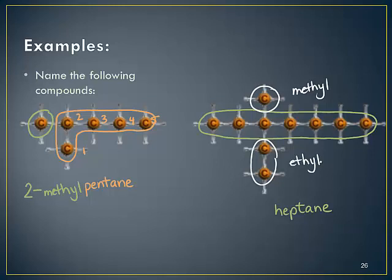Remember that when we start numbering the chain to identify where those branches are, we do it so that you get the lowest number or set of numbers for your substituents. If we start at this end, they would be attached to the three carbon for the methyl and the three for the ethyl.